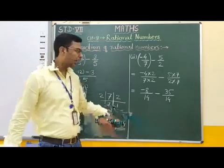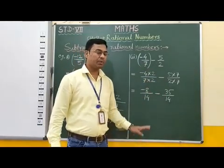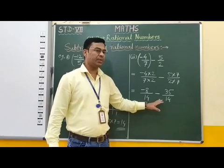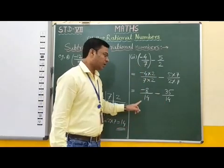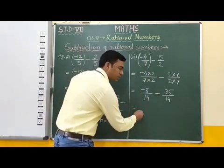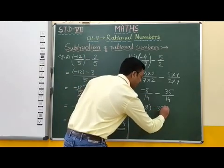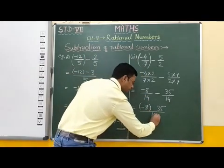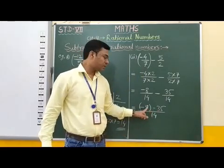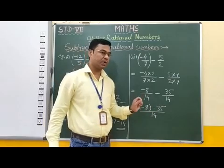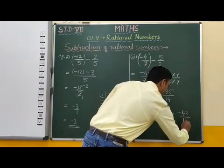Now students, these two rational numbers are equivalent. Therefore, if we subtract them — since the denominators are the same — we only subtract the numerators. Therefore: minus 8 minus 35, with the common denominator 14. Now, minus 8 minus 35 is the subtraction of integers, which equals minus 43. Therefore we can write minus 43 over 14.